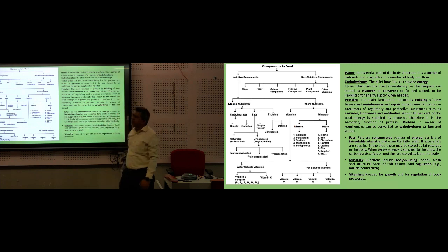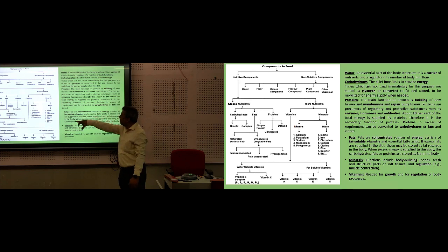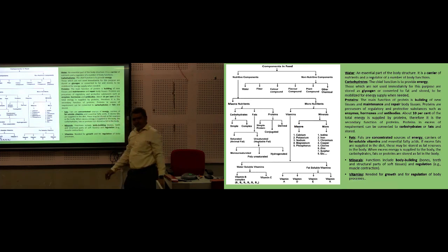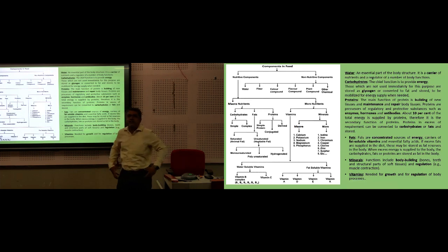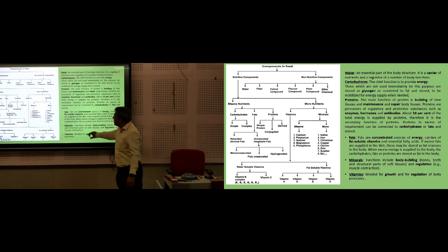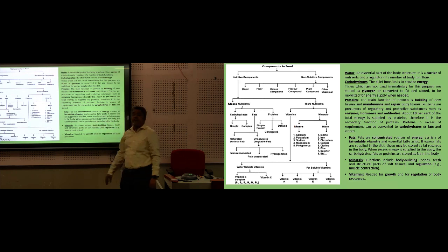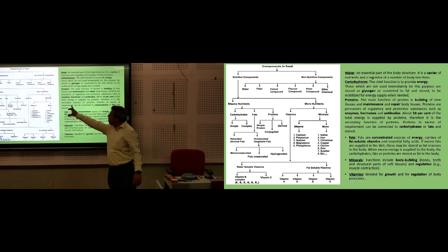Fat is a concentrated source of energy — it gives 9 kilocalories per gram. It is also composed of essential fatty acids: linoleic, linolenic, and arachidonic acid. Wherever you find fat, it is composed of fatty acids. Sometimes carbohydrates, fats, or proteins are stored as fat in the body — that will be taught later.